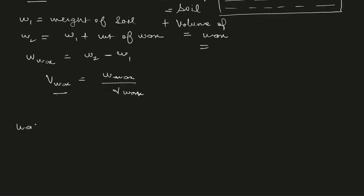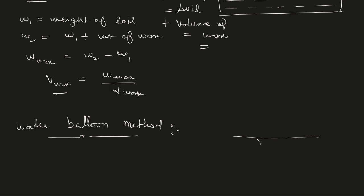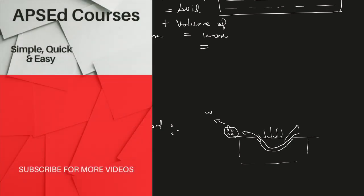The water balloon method is used where cohesionless soil with large-sized particles makes volume measurement difficult. We dig a hole and take out the soil. A thin polythene sheet is placed in the hole to conform to its boundary, and then water is filled in. The volume of water filling the hole gives the volume of the hole. Weight of the extracted soil divided by this volume gives the unit weight of soil.